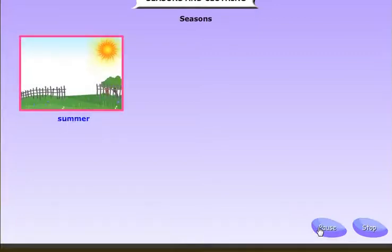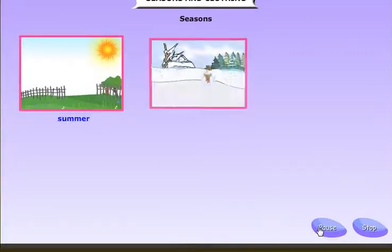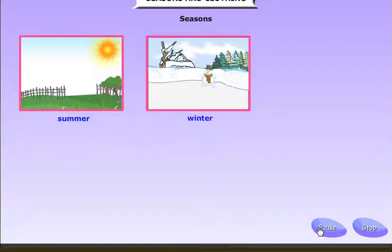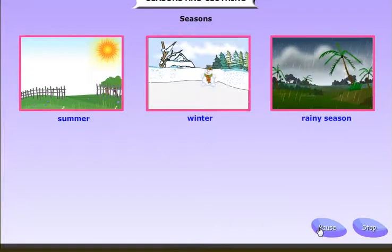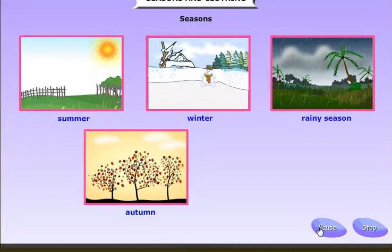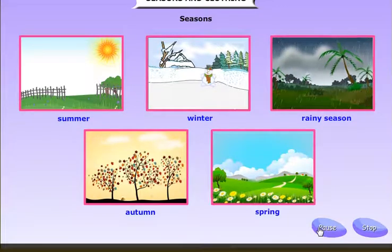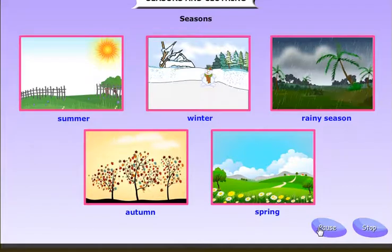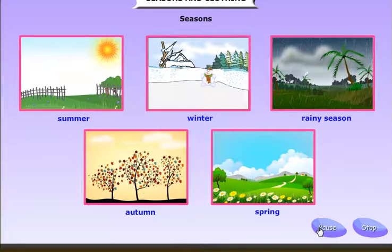Seasons and clothing. Seasons are the changes that happen in our environment. There are five seasons: spring, autumn, summer, winter, and rainy season.